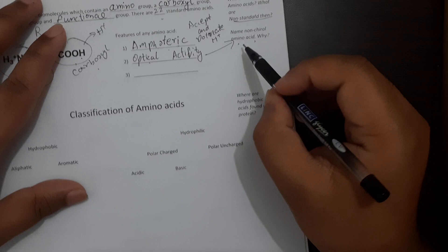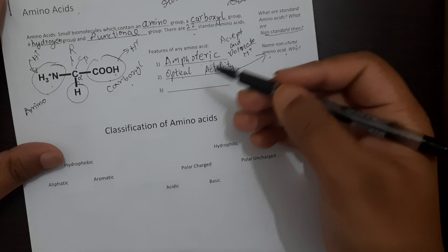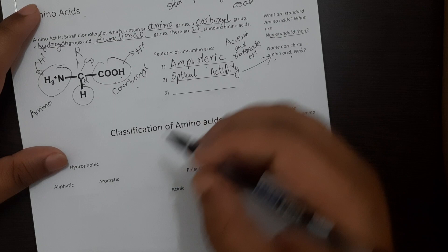Therefore glycine is a non-chiral amino acid and it is the only amino acid which has the inability to change the direction of plane polarized light.